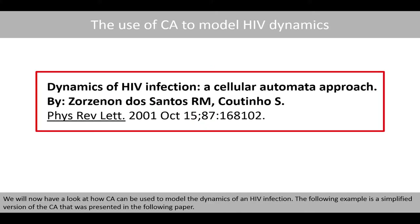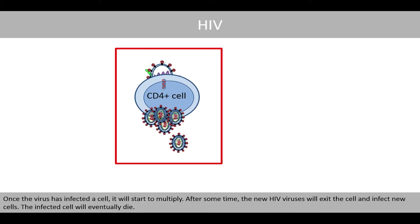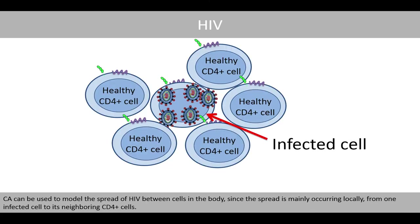We'll now have a look at how cellular automata can be used to model the dynamics of an HIV infection. The following example is a simplified version of the cellular automata presented in a referenced paper. The HIV virus infects human CD4-positive cells, and especially T-helper cells of the immune system, thereby weakening the immune system and causing AIDS. Once the virus has infected a cell, it will start to multiply. After some time, the new HIV viruses will exit the cell and infect new cells, and the infected cell will eventually die. Cellular automata can model this spread since it occurs locally, from one infected cell to its neighboring CD4-positive cells.